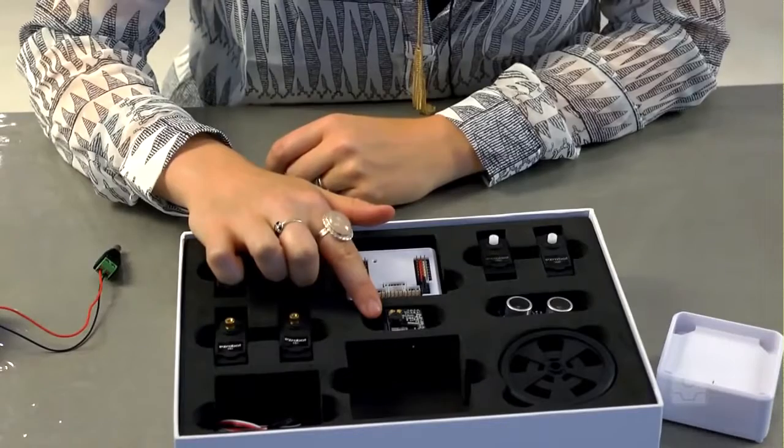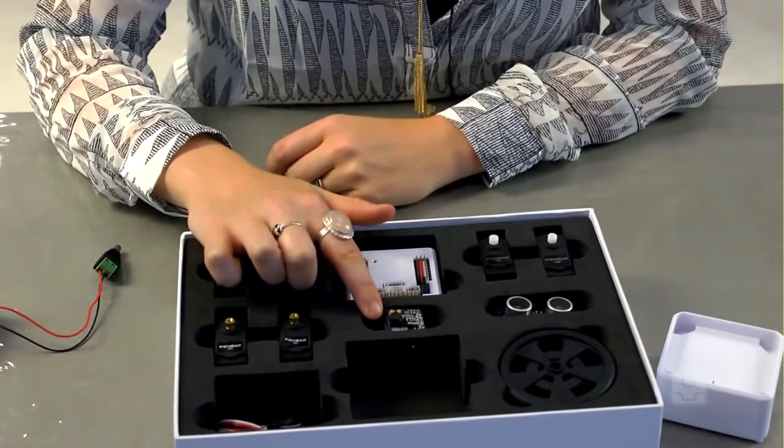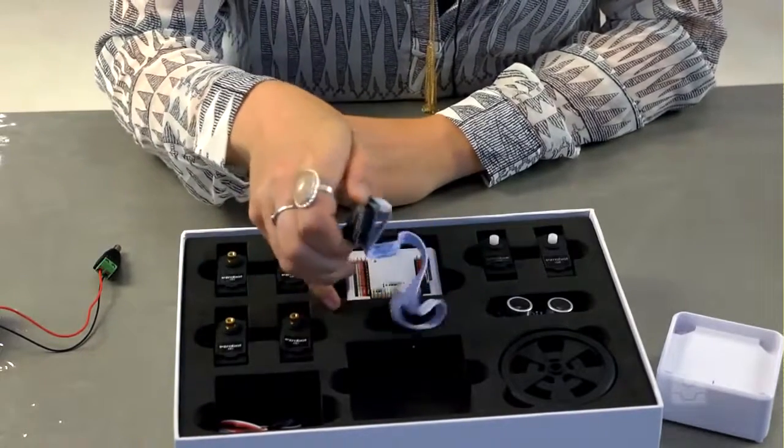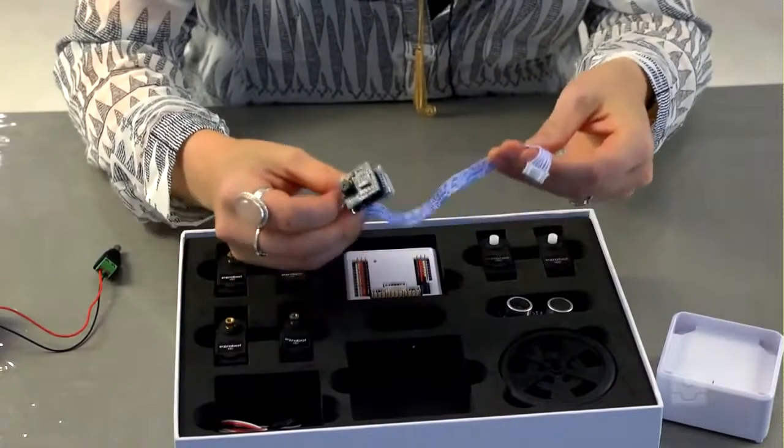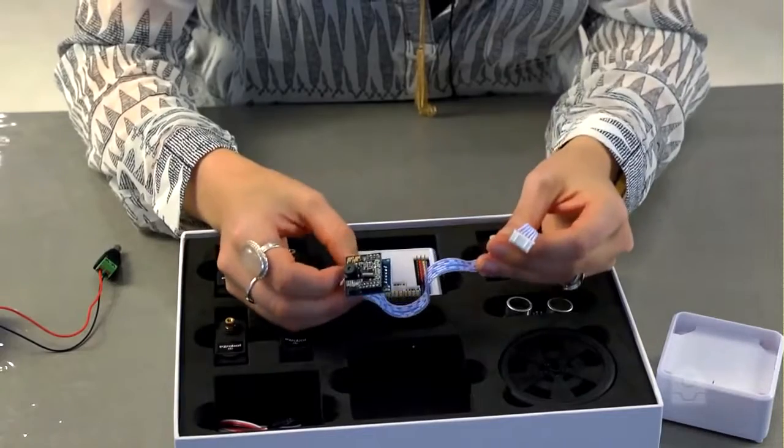This is the EZRobot camera. This small camera connects to the EZB V4 to give your robot vision tracking features, such as face tracking, motion tracking, color tracking, and even object training and tracking.